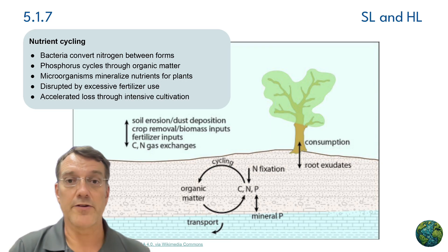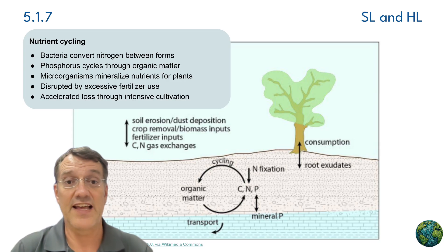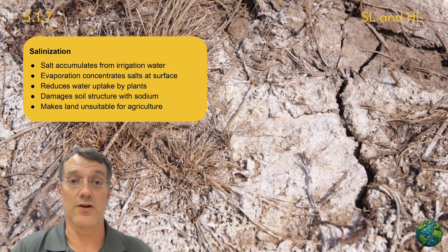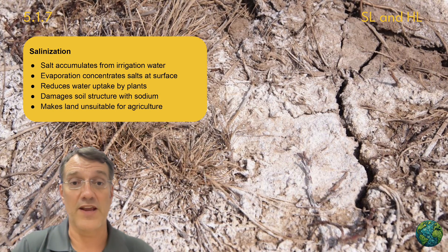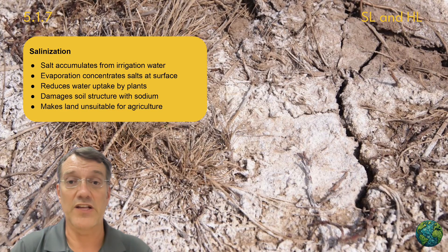Nutrient cycling involves bacteria converting nitrogen between different forms and microorganisms mineralizing nutrients to make them available to plants. Unfortunately, excessive fertilizer use can disrupt these natural cycles, and intensive cultivation accelerates nutrient loss — this transformation is essential for maintaining soil fertility. Salinization occurs when salt accumulates from irrigation water and evaporation concentrates those salts at the surface. This reduces water uptake by plants, damages soil structure with sodium, and can make land unsuitable for further agriculture, representing a form of soil degradation that people have to work to prevent.